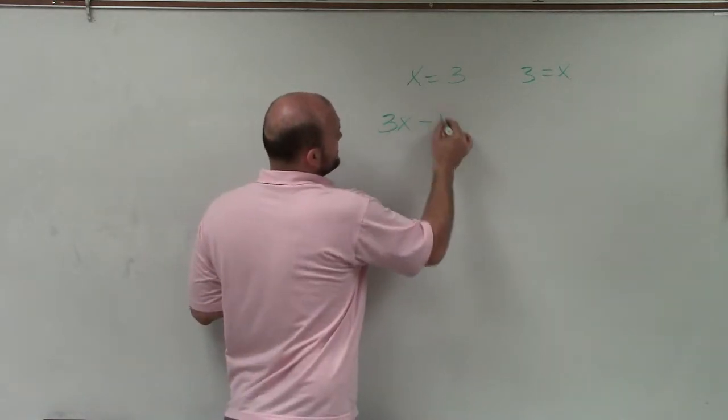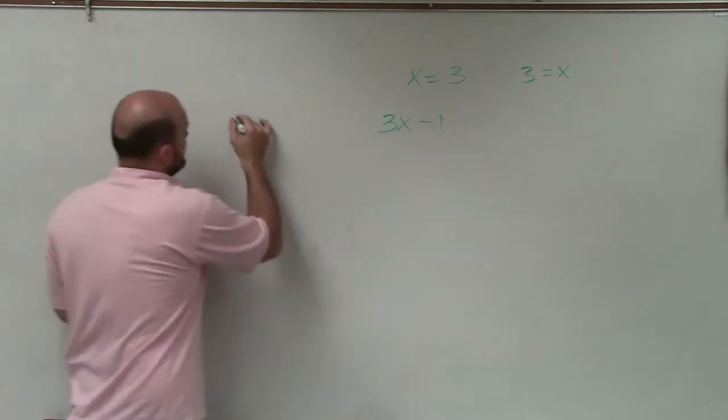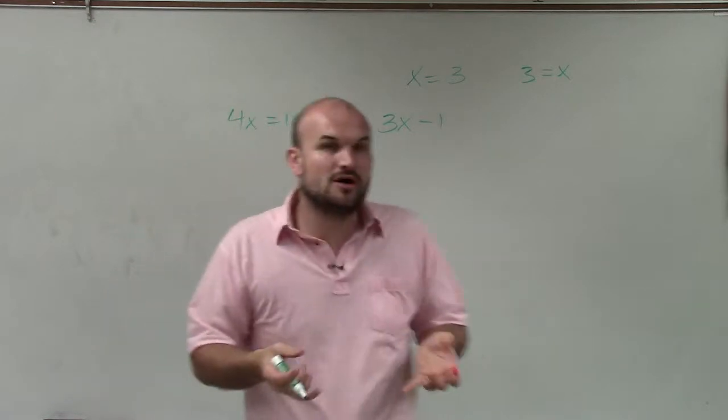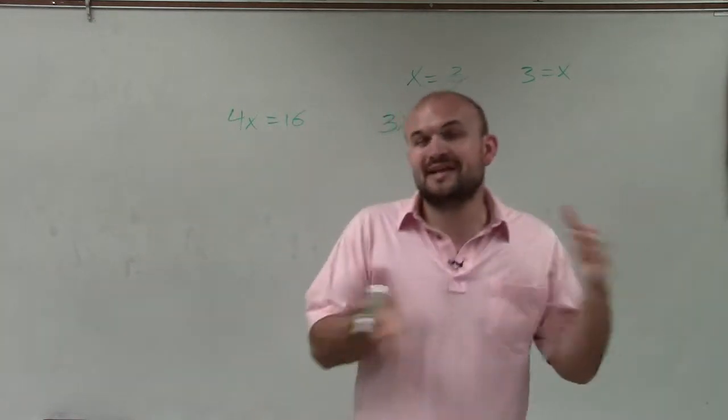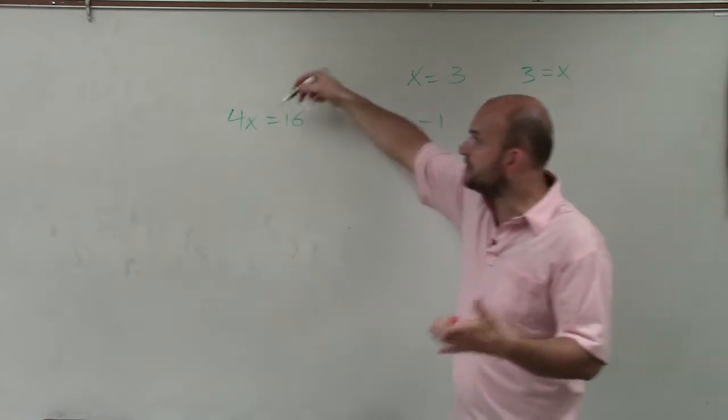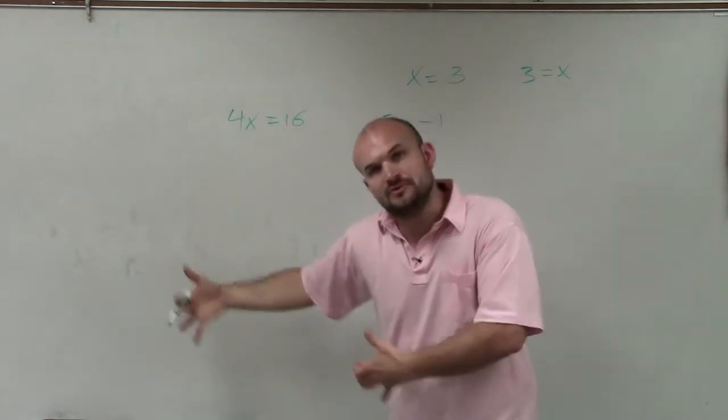So when I have 3x, or let's do something simple, 4x equals 16, I want to get the variable by itself. So we go back to our applying our inverse operations. You know, what is happening to the variable right now? The variable's being multiplied by 4. So I want to undo that.